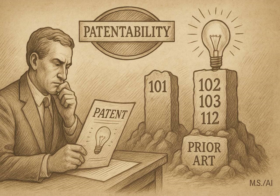AIA 102(b)(1)(B) provides a grace period. If you, the inventor, publicly disclosed your invention — say, at a conference — within one year before you filed your patent application, and then someone cites that same disclosure or a later one derived from it against you as prior art, this section might allow you to disqualify it. It protects inventors from their own early disclosures, to an extent.